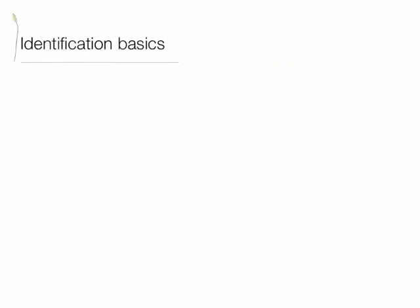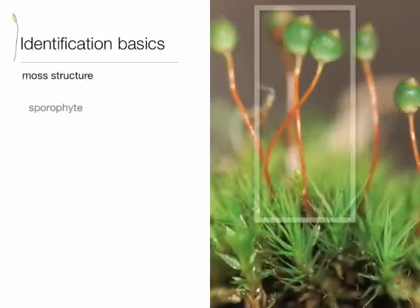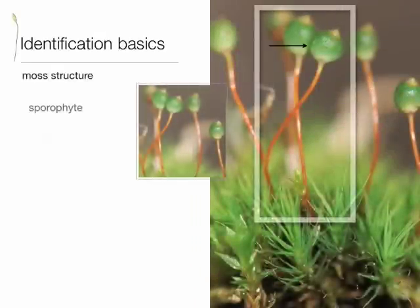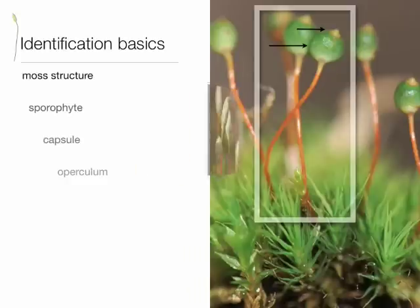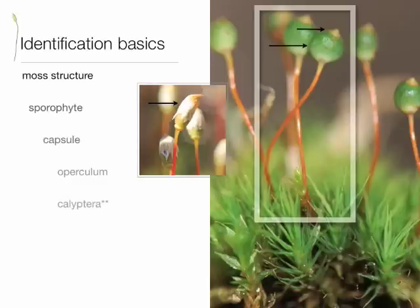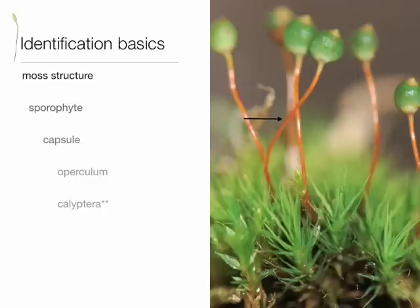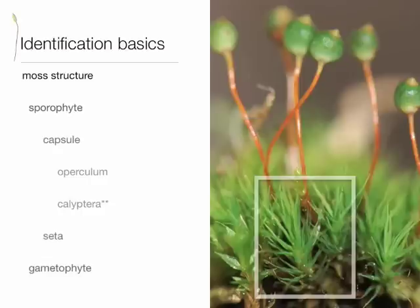Now let's introduce some basic terminology on the structure of a moss. We have the sporophyte, which is the upper structure, composed of the capsule — this contains the spores. There can be a lid or cap called the operculum. Sometimes covering the capsule is a woolly or papery structure called the calyptra, which is actually a remnant of the gametophyte that protects the growing sporophyte. And then we have the seta, which elevates the capsule. The lower structure is the gametophyte — the dominant photosynthetic portion — and it has leaves, stems, and rhizoids.